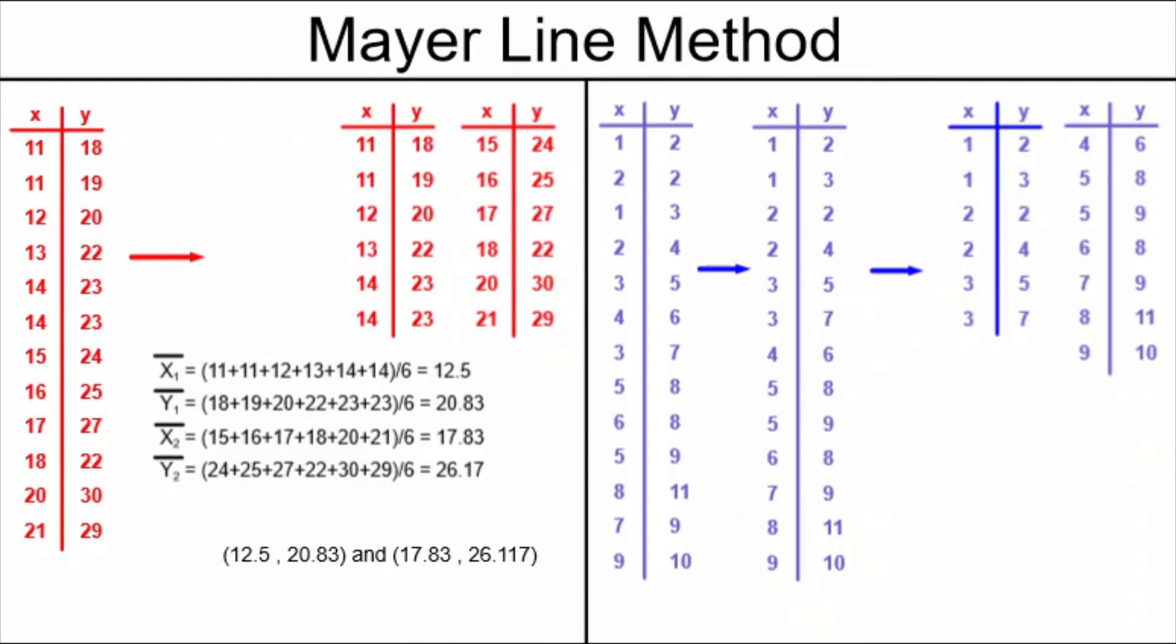In the blue example, I'm going to do the same things. I find x bar 1, y bar 1, x bar 2 and y bar 2, and I arrange them into two new points. I need these points to find the equation of the regression line.